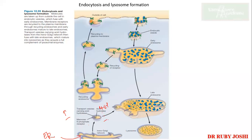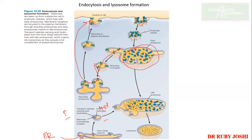The vesicle carrying acid hydrolases, which is meant for the lysosome, is ready. Meanwhile, receptors on the cell surface go outside to fetch cargo molecules meant for degradation — those molecules bind to the receptors, which then undergo endocytosis. The receptors keep getting recycled so they can fetch new cargo proteins. The cell needs nutrition, and once the acid hydrolase-containing vesicle fuses with the late endosome, the lysosome is formed.